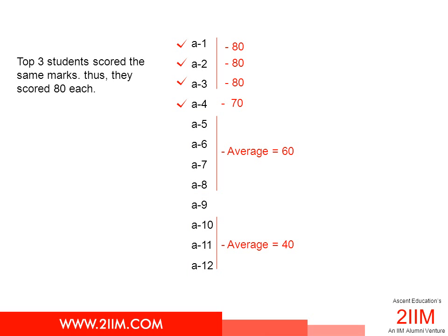Now, the top three students scored the same marks. So they should have all scored 80, because the average is 80 and all three have scored the same mark. So now we know the scores of A1 through to A4.